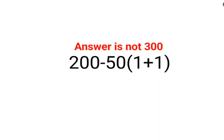Welcome everyone, so today we are going to understand why the answer for this question is not supposed to be 300. Say 200 minus 50 is 150 and 1 plus 1 is 2, and there is no sign between 50 and the bracket, that means it is multiplication, then the answer comes out to be 300.